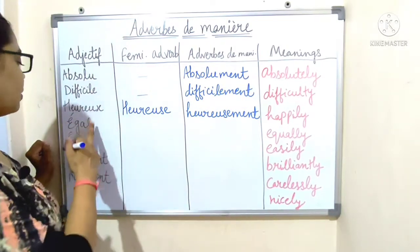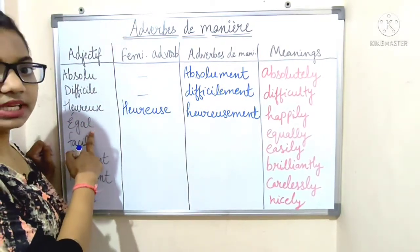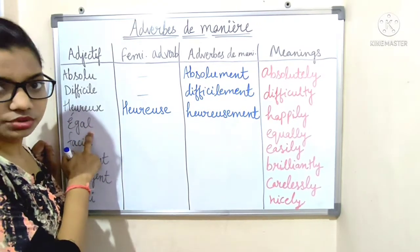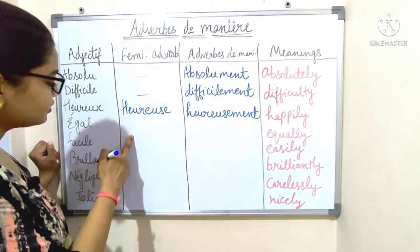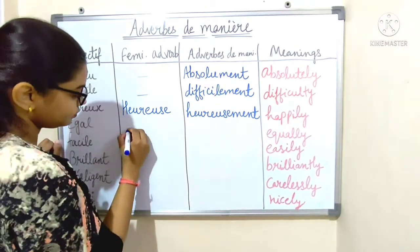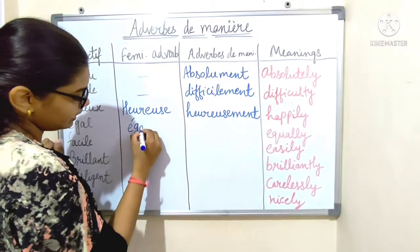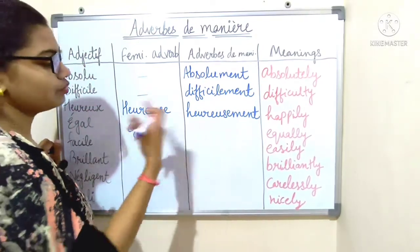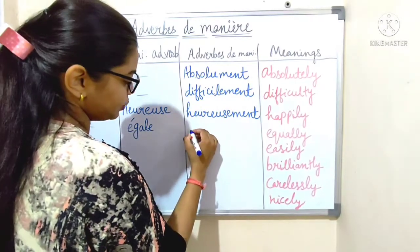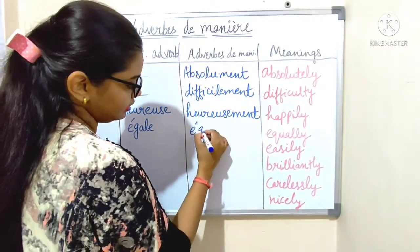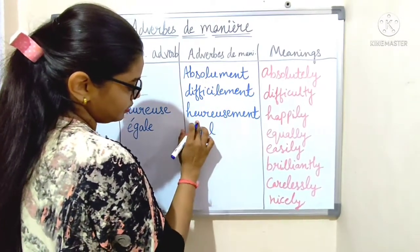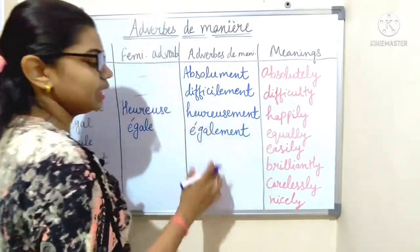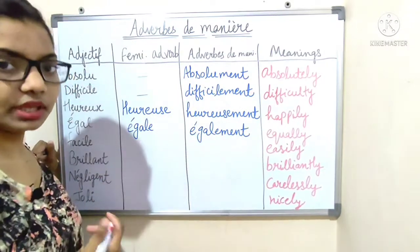Next: 'égal', which means 'equally'. It ends with a consonant, so we make it feminine by adding E — 'égale' — then add '-ment': 'également', which means 'equally'.